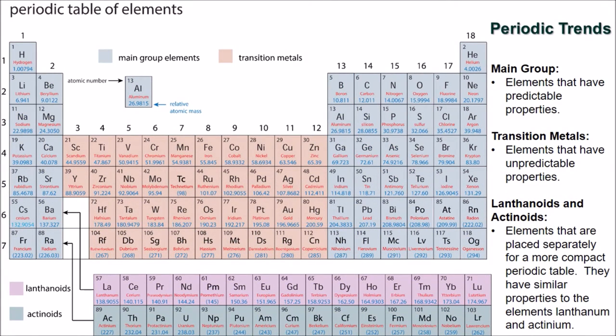The periodic table can also be divided into main group elements, transition elements, and the lanthinoids and actinoids. The main group elements have properties that are predictable. Transition metals are elements that have unpredictable properties, and the lanthanides and actinides are elements that are placed separately for a more compact periodic table. They have similar properties to the elements lanthanum and actinum.